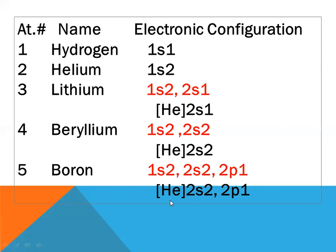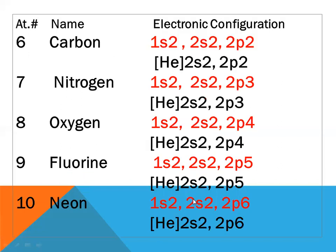Instead of 1s2 we place helium, giving the valence electronic configuration as [He] 2s2 2p1 for boron. Carbon, atomic number six: 1s2 2s2 2p2. Instead of 1s2 we place helium, so configuration is [He] 2s2 2p2.